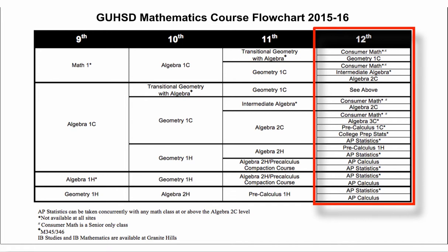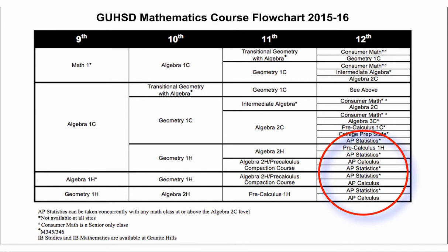Additional 12th grade offerings include Geometry 1c, Intermediate Algebra, Algebra 2c, Pre-Calculus 1c, College Prep Statistics, AP Statistics, Pre-Calculus 1 Honors, and AP Calculus. It's important to note that Advanced Placement is an area of coursework offered by the College Board, which is an outside private company that tests and offers courses worldwide. The school serves the Advanced Placement program by offering these courses — considered the first year of college coursework — on the high school campus.